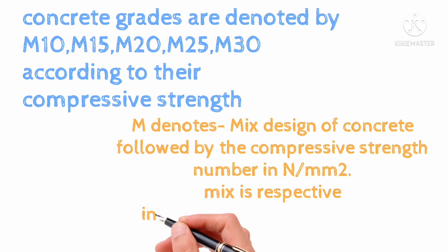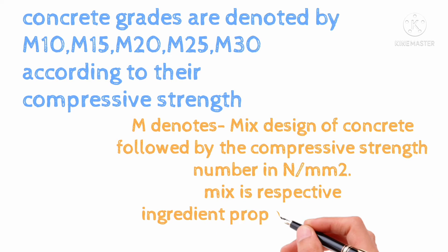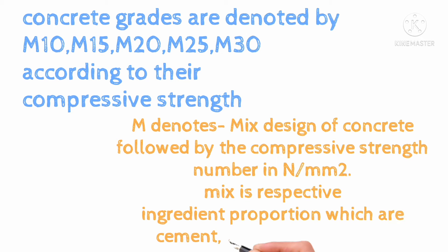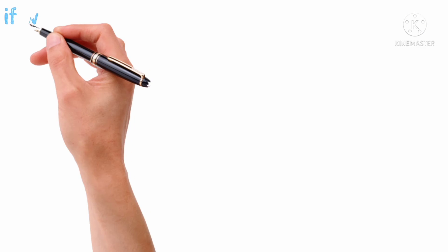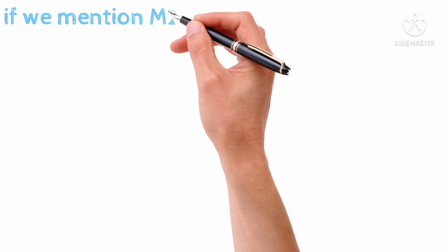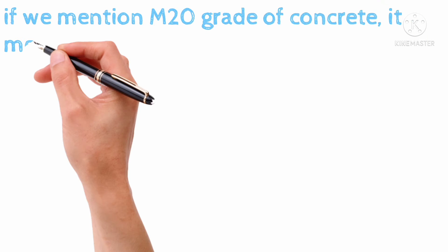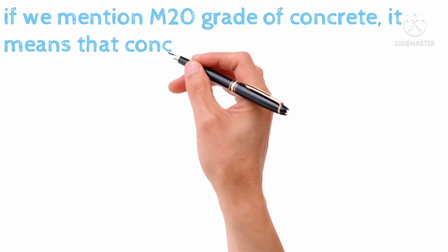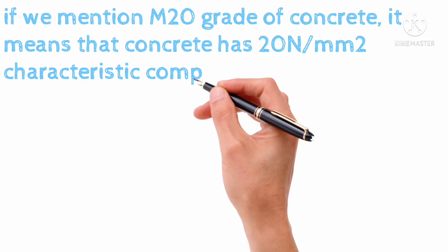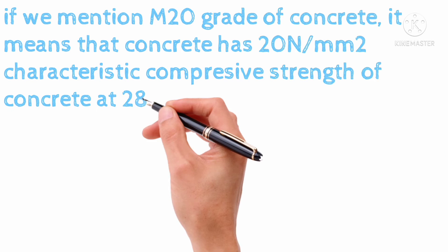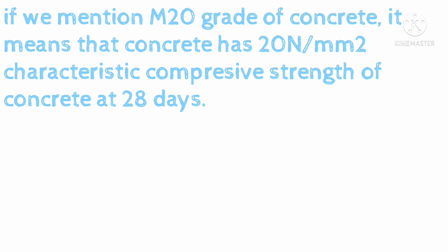Mix refers to the respective ingredient proportions, which are cement, sand, and aggregate. If we mention M20 grade of concrete, it means that the concrete has 20 N per square millimeter characteristic compressive strength at 28 days.